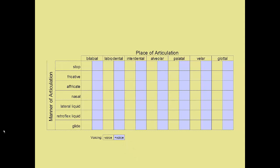Now that we've constructed our table, let's look at the IPA symbols for the consonant phonemes in American English. We'll start with the stops. All of these phonemes are produced with a full closure of the airstream. Reading across the row, we have p, b, t, d, k, g, and glottal stop. Note that all of these sounds, except for glottal stop, use symbols that correspond to our English spelling and should be quite easy to remember.